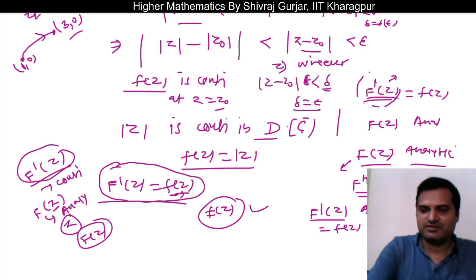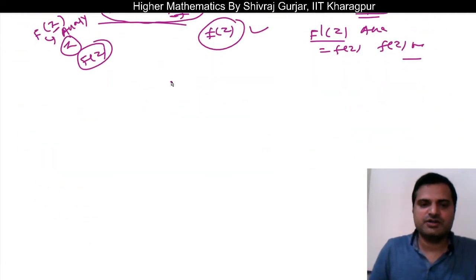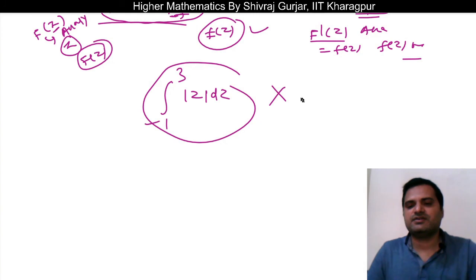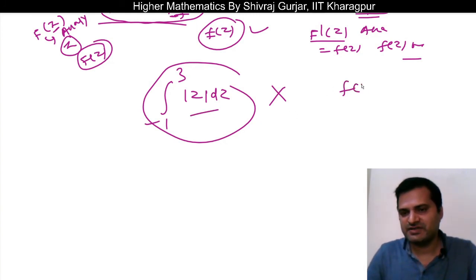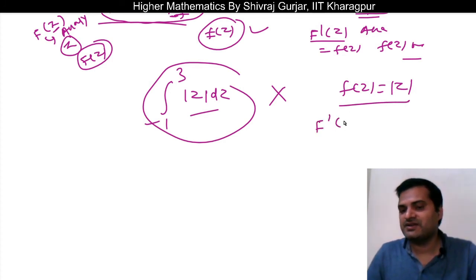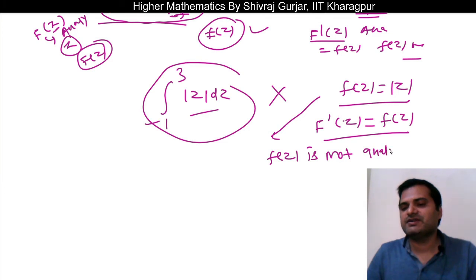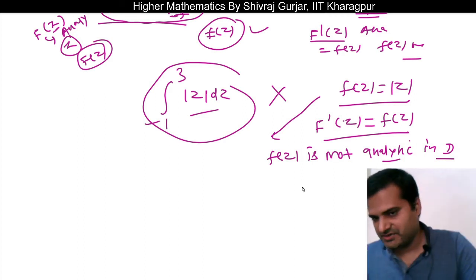But f(z) = |z| is continuous, yet it is not analytic. Therefore, the anti-derivative of |z| does not exist. So for the integral of |z| dz from -1 to 3, this integral does not exist in the complex sense — because we cannot find any capital F(z) whose derivative equals f(z), or equivalently because f(z) = |z| is not analytic in the given domain D.